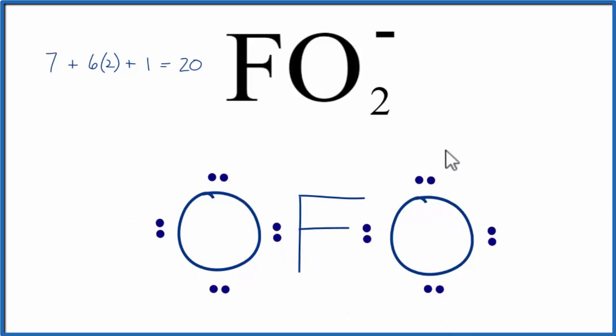So we've completed the octets on the oxygen, we've used 16 valence electrons, we have 4 more. The fluorine only has 2 pairs of electrons, it has 4 electrons, so it needs to have a total of 8.